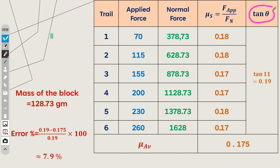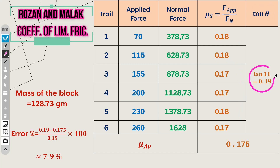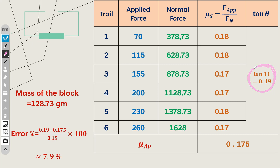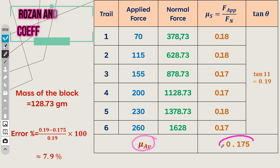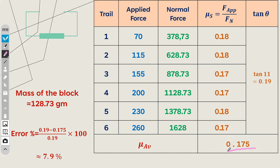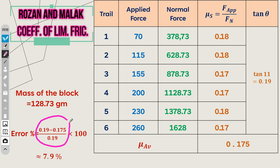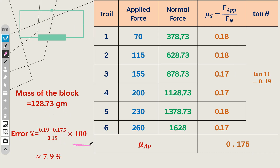Tan theta, or mu s — so tan 11 degrees, where 11 is the angle of repose — gives tan 11 equals 0.19. We have shown the mu average, which equals 0.175, obtained from the sum of mu s over 6 trials. The mass of the block is 128.73 grams. The error percentage equals (0.19 minus 0.175) over 0.19 times 100, which equals 7.9 percent.